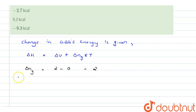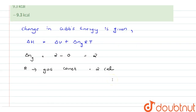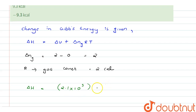R is the gas constant, and it has the value 2 calorie per kelvin per mole. So ΔH equals 2.1 into 10 raised to 3, plus Δng·R·T which is 2 into 2 into 300.